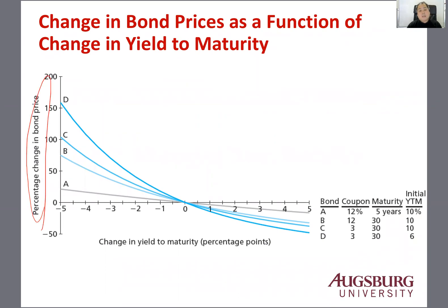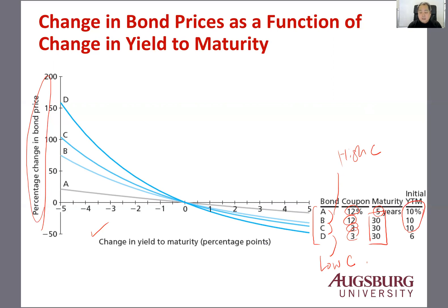The Y-axis is the percentage change in bond price and X-axis is the change in yield to maturity. These four bonds have different coupon rates. A and B are high coupon, and C and D are low coupon. For maturity, A is short-term and B, C, and D are long-term. In the initial YTM, A, B, and C have high YTM and D has low YTM.